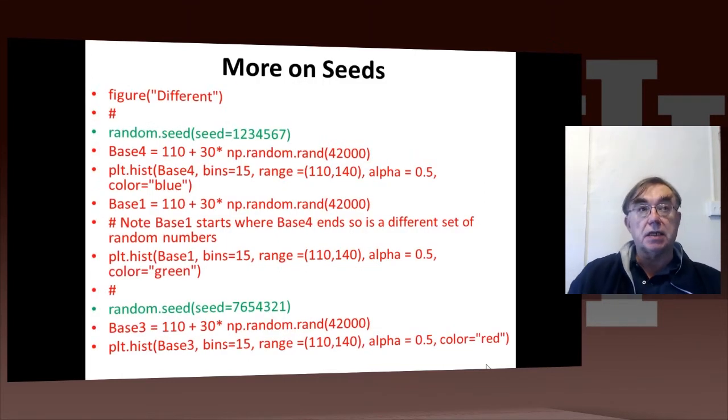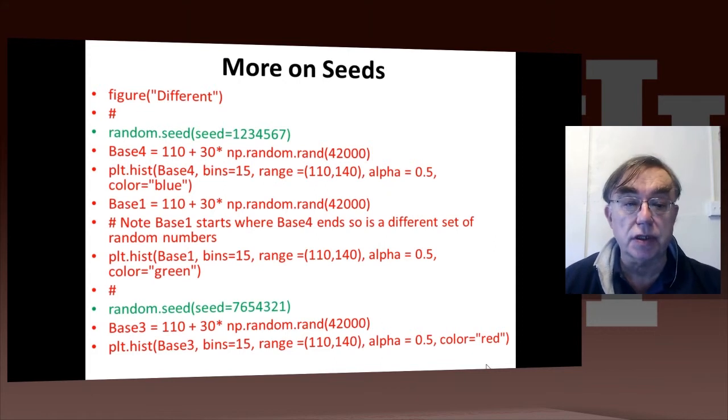That could be contrasted with a different choice. Here we actually have three different random variables: base4, base1, and base3. Base4 is generated with the same seed we had before, 1234567, so it's actually equal to the previous distribution.